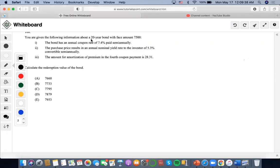This problem gives the following information: 20 years, $7,500 face amount, and the bond has an annual coupon of 7.4% paid semi-annually. Well, 7.4 divided by 2 is 3.7%, right? So face amount of $7,500...